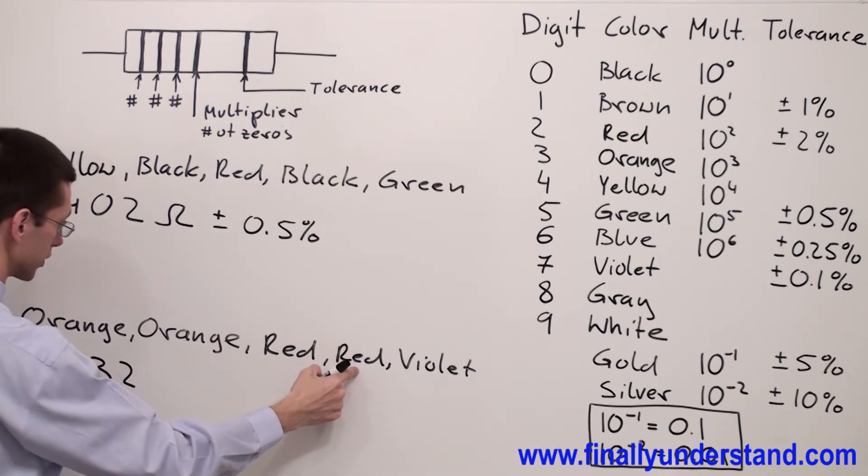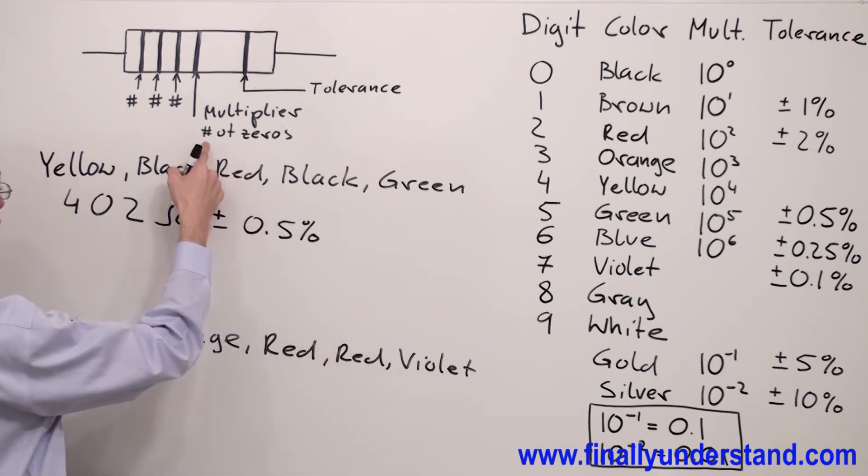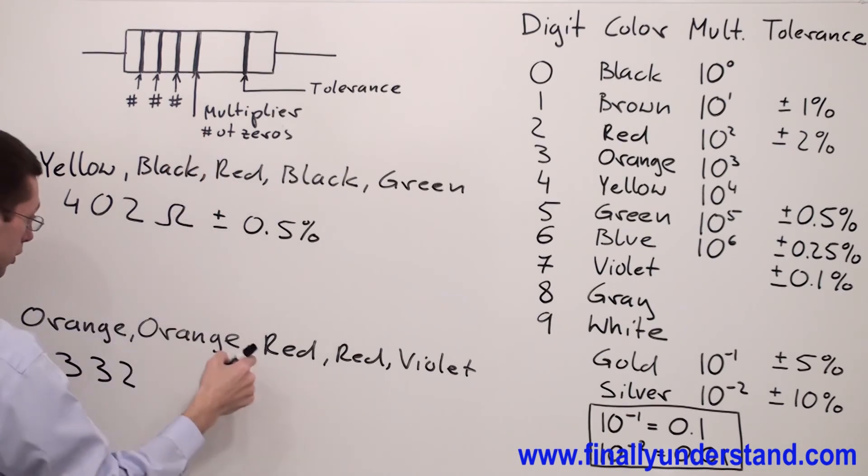Next, red represents the number of zeros because it's at the fourth position. At the fourth position, I have multiplier or number of zeros. That's why I'm going to have two zeros.